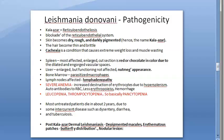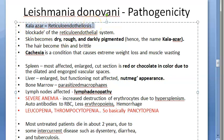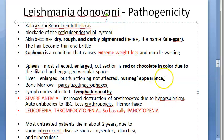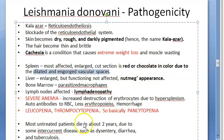Now we move to pathogenicity. Pathogenicity and life cycle overlap significantly — if they ask one, include the other. Kala-azar is essentially a reticuloendotheliosis — it affects the reticuloendothelial system, causing blockade of that system. The skin becomes dry, rough, and darkly pigmented — hence the name kala-azar. Hair becomes thin and brittle. There is cachexia — extreme weight loss and muscle wasting.